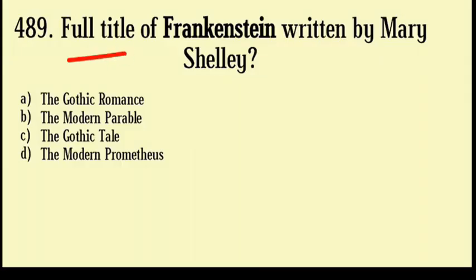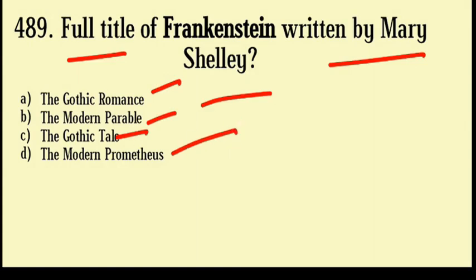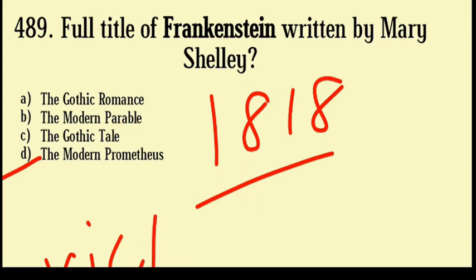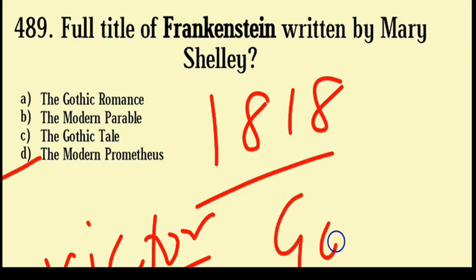What is the full title of Frankenstein written by Mary Shelley? Options are: The Gothic Romance, The Modern Parable, The Gothic Tale, The Modern Prometheus. Correct answer: Option number D, The Modern Prometheus. Published in 1818, it tells the story of Victor Frankenstein, a young scientist who creates a sapient creature in an unorthodox scientific experiment. Shelley was the daughter of writer William Godwin.